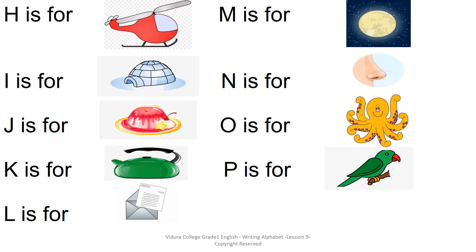H is for Helicopter. I is for Igloo. J is for Jelly. K is for Kettle. L is for Letter. M is for Moon. N is for Nose. O is for Octopus. And P is for Parrot. Ok, well done.